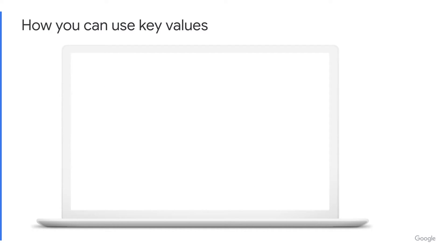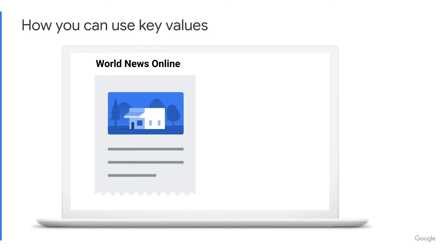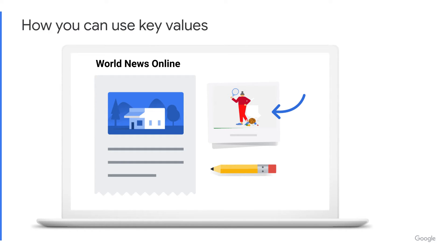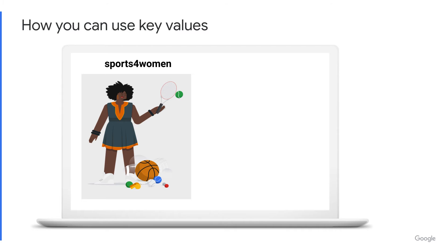Now we'll talk through a practical example. Imagine you run a local news app and website called World News Online, which also has a sports section. World News Online is renowned for its cutting-edge reporting on what's happening around the world. They also report on news and have a strong following of readers who visit daily to hear specifically about what's going on in sports. Their sports readers are both female and male of all ages, and they have strong reader engagement. A sports company called Sports for Women would like to advertise their product to your sports audiences, as they would be potential customers.